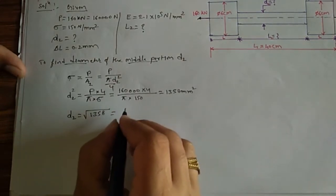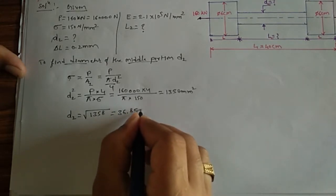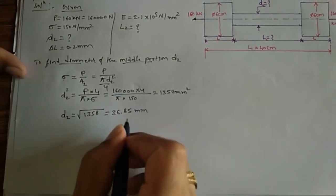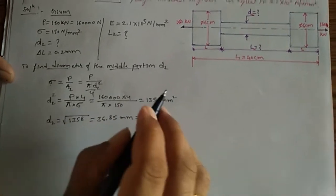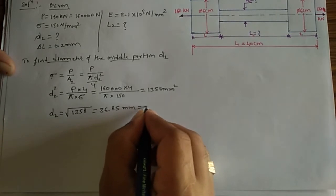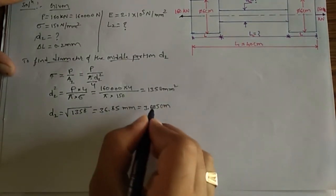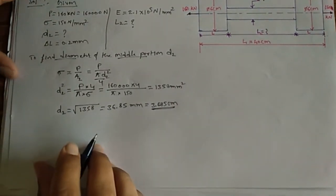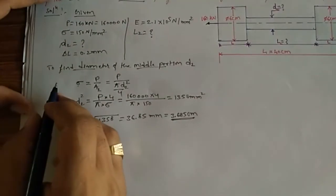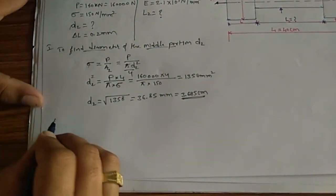So D2 squared equals 1,358 mm square. Taking the square root of 1,358, we get D2 = 36.85 mm, or 3.685 centimeters. This is the answer for the first portion of the problem.